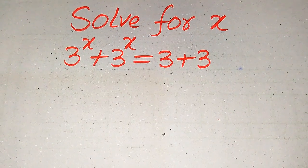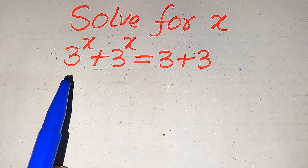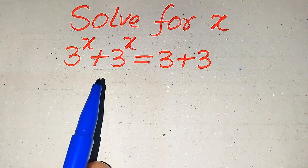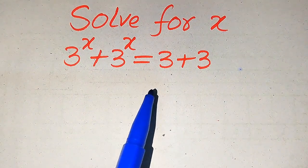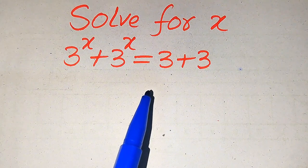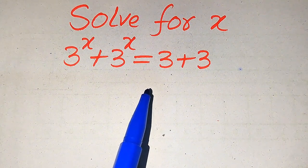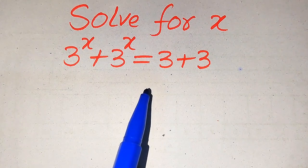Hello everyone. How to solve this problem for the values of x: if we have 3 to the power of x plus 3 to the power of x equals 3 plus 3, and we solve this problem for all the values of x. First we find all the roots of this equation, and at the end we will verify which of the roots are solutions and which are extraneous roots.